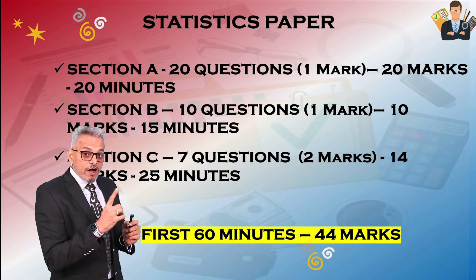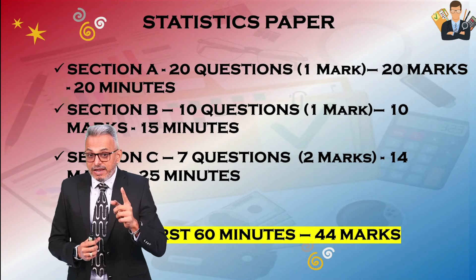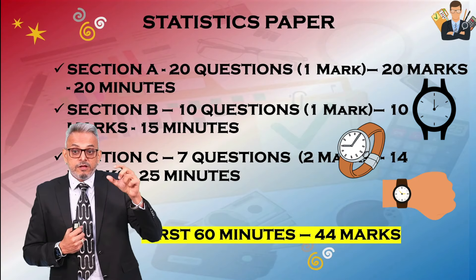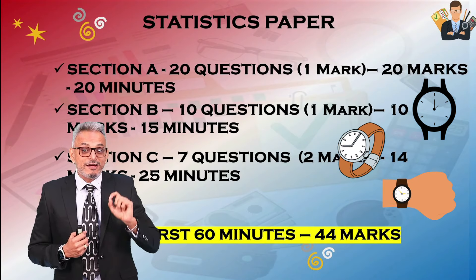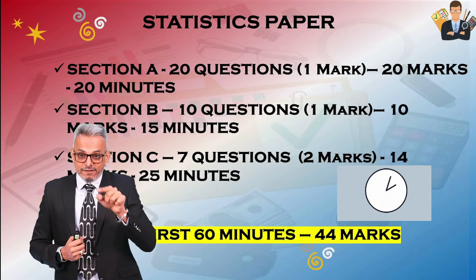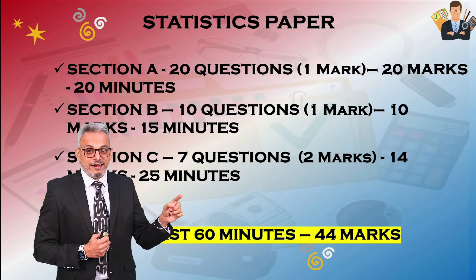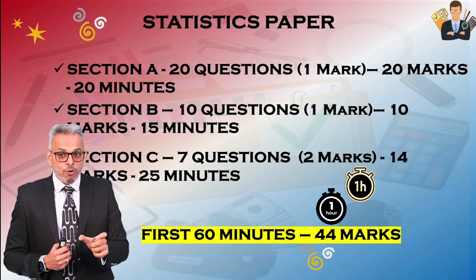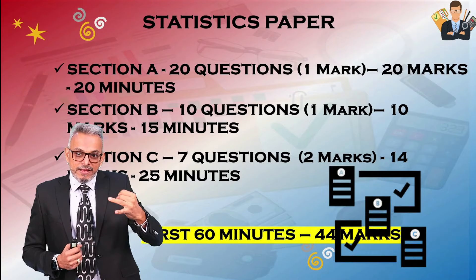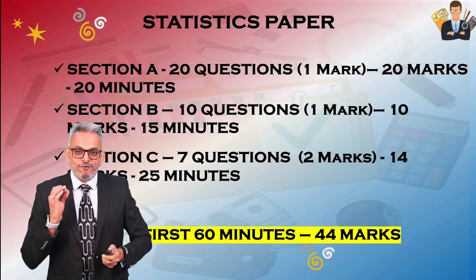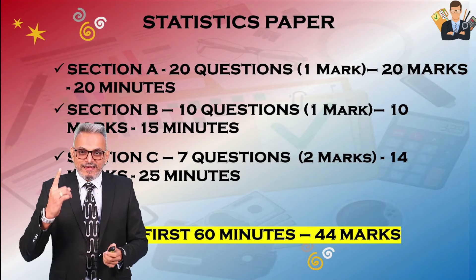Always keep a watch on the table where you are writing the paper — your eyes should constantly be on the time. After one hour, Sections A, B, and C should be complete. You can score 44 marks in Sections A plus B plus C within that one hour.